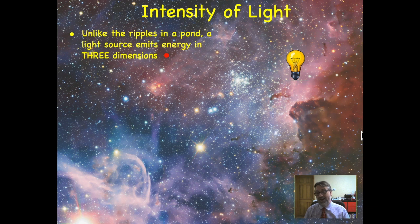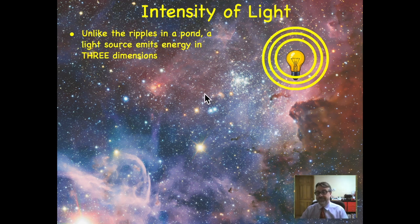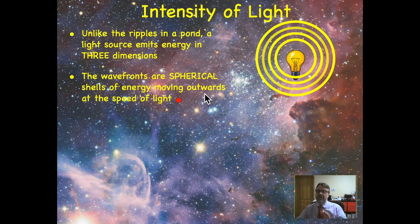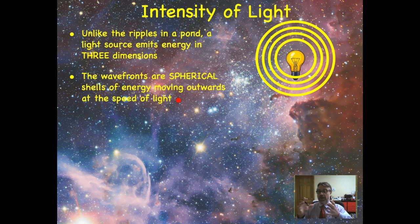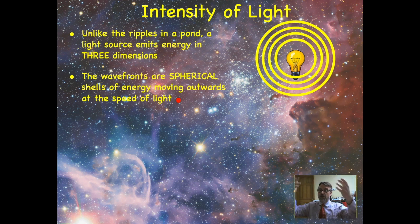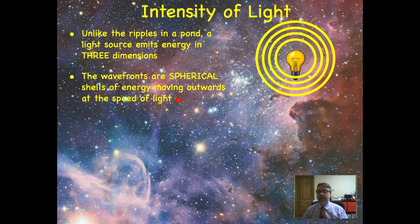Now, unlike a pond, where the energy is moving out and just across the surface in two dimensions, a light bulb is going to transmit the energy of the wave in three dimensions, all in the space around the bulb. These wavefronts aren't really circles. These wavefronts represent spherical shells. The energy of the bulb is going ever outward and across a larger and larger spherical wavefront, and this energy moves out at the speed of light.